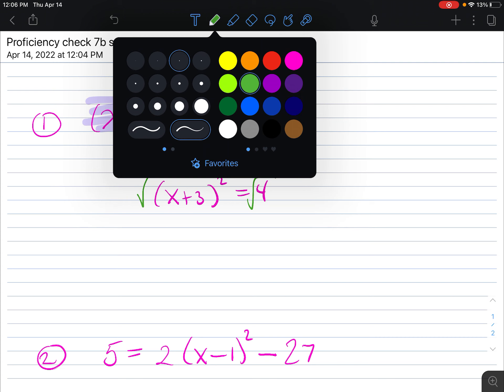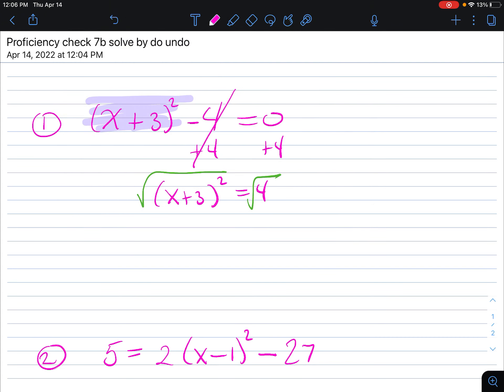When I do this, the square root undoes the square, I get an x plus 3. And then this is the part we have to remember, there's actually plus or minus 2.